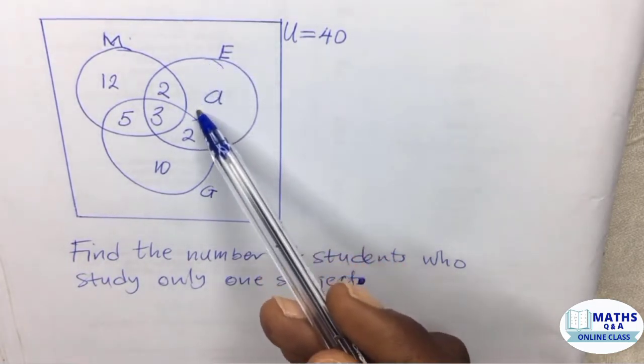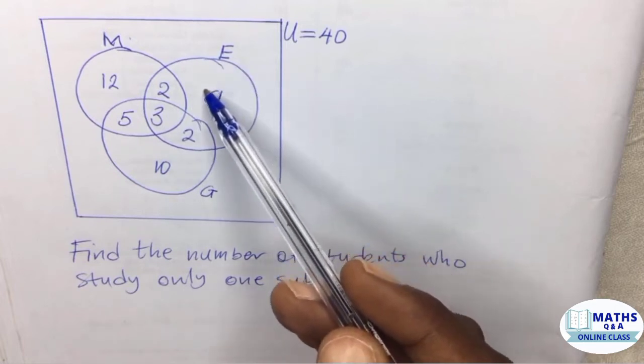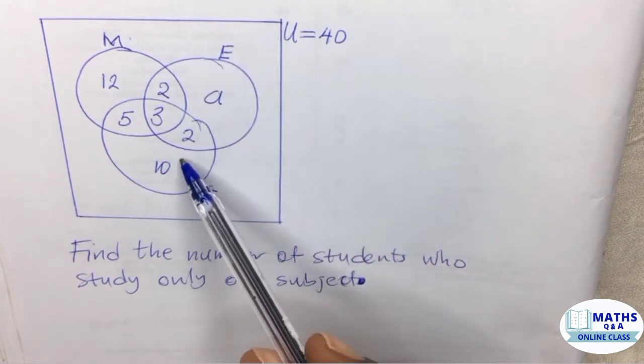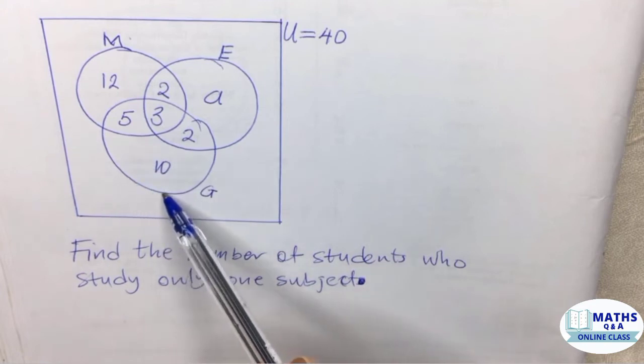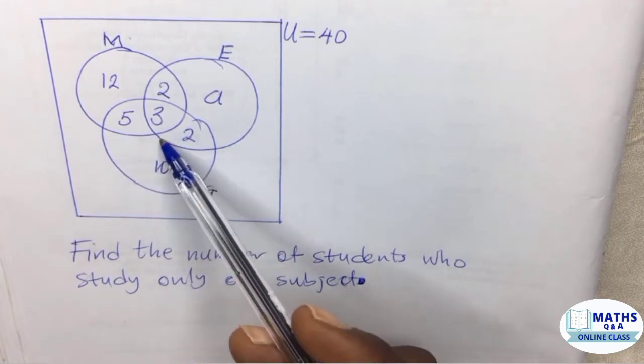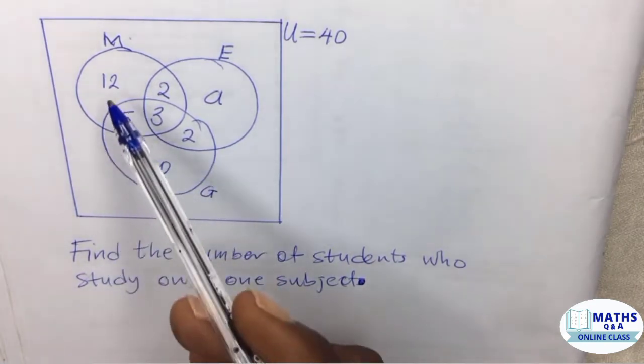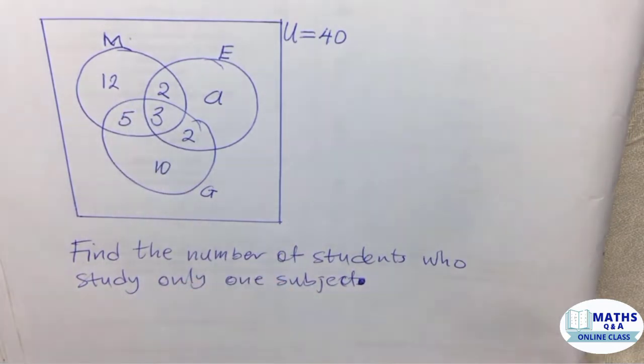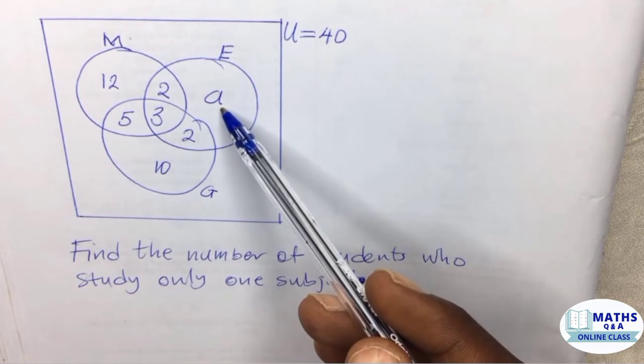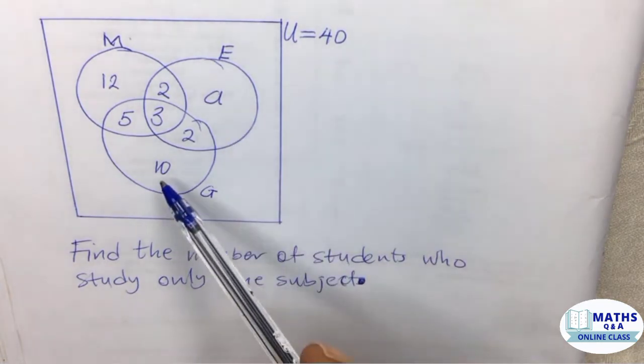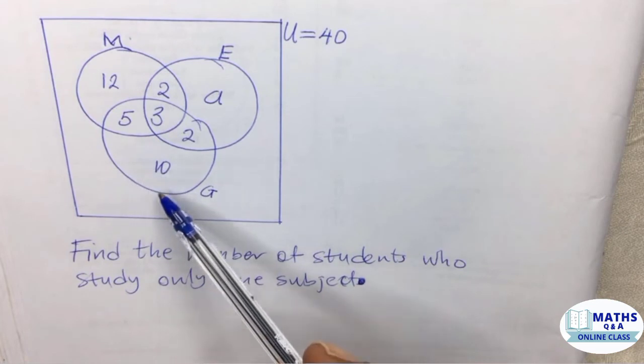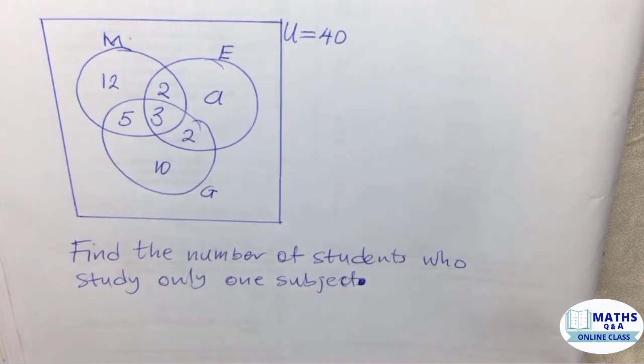The students who study economics only are also falling under this region. Then the students who are studying geography only will be this region. Now we can see that mathematics only equals 12. Economics is unknown, but we know geography only is 10.